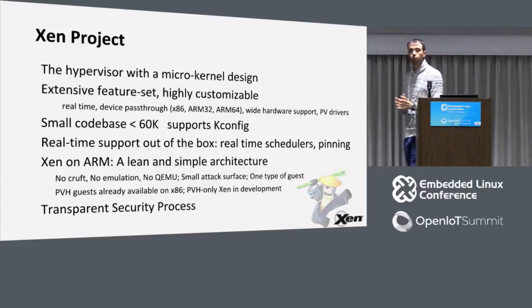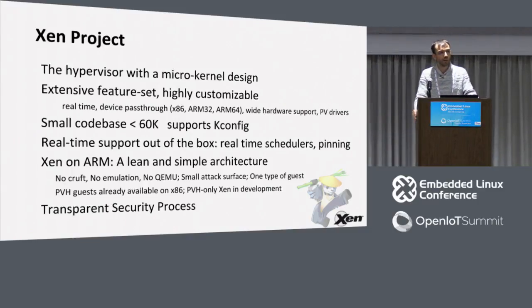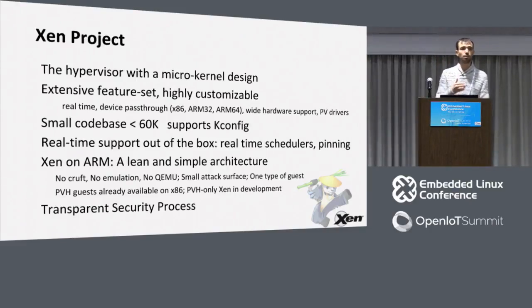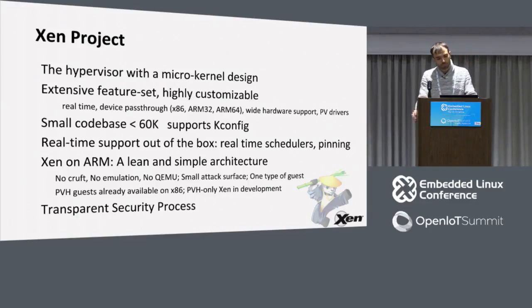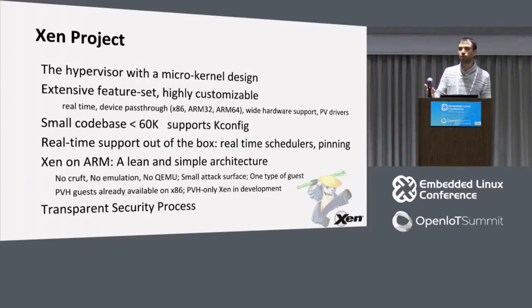Security process is really important, especially if you are a vendor or system integrator. When you choose an open-source project, really look at the security process and the guarantees in terms of CVE handling. Some open-source projects out there make no guarantees at all, leaving it up to the downstream user. Xen does have a security process — there is a document clearly stating what happens when there is a security vulnerability. It supports pre-disclosure: you can sign up and receive notification of security vulnerabilities before they're public, so that you can ready a fix.